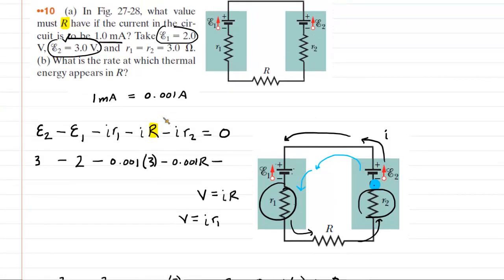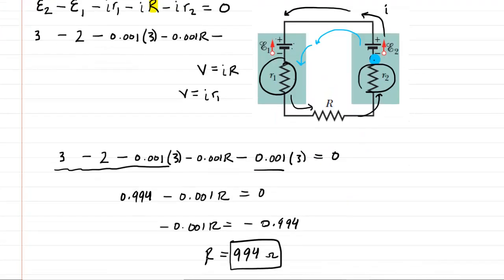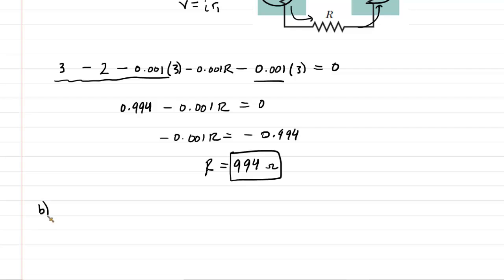We can go back up and check out part B. It wants the rate at which thermal energy appears in R. Well, the rate at which thermal energy appears is another word or phrase for power. So they're really asking us to calculate the power that occurs within resistor labeled capital R. The power of a resistor can be calculated by the current squared times the resistance value. So what we're going to do is take the current of 0.001 amps. Don't forget to square it. And then multiply that by the resistance value that we just figured out.